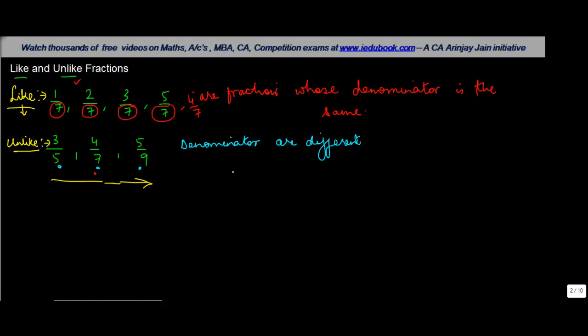This is the basic difference between a like fraction and an unlike fraction. Now you can always convert these unlike fractions into a like fraction, right? But how do you do that?